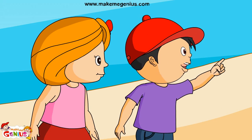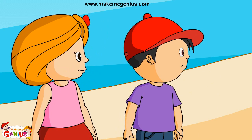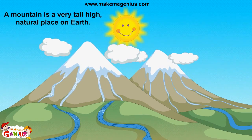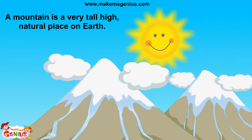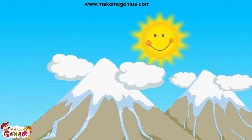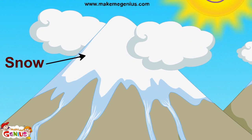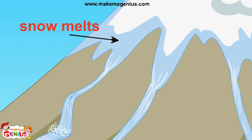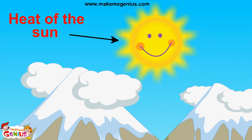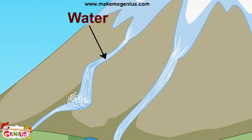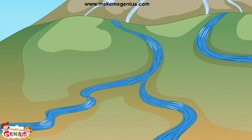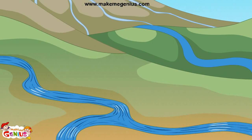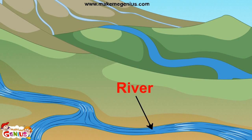It is very high and also it has snow over it. This is called a mountain. A mountain is a very tall, high natural place on Earth. There is a mountain with a lot of snow over it. This snow melts due to the heat of the sun. The water starts coming down the mountain. When water falls from a height, it is called a waterfall. The water from the waterfall moves towards lower areas, reaches the plain land, and starts flowing in a river.